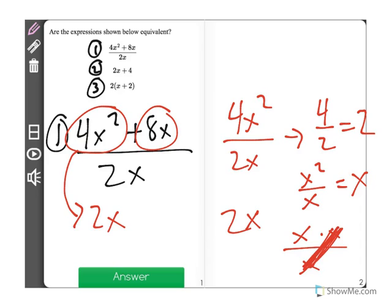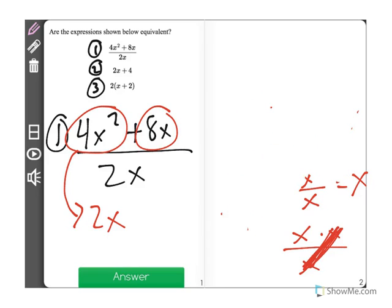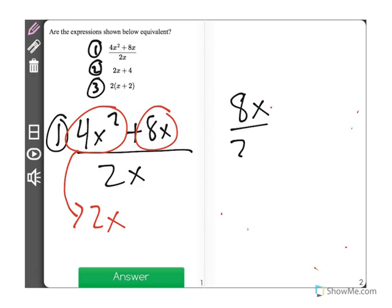Now what we need to do is take 8x and divide it by 2x. That's our second term. So 8x divided by 2x. First, remember we always use like terms.